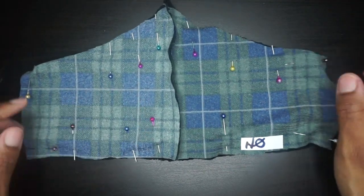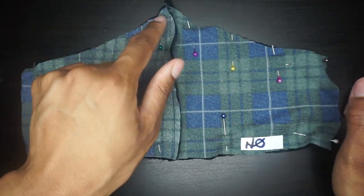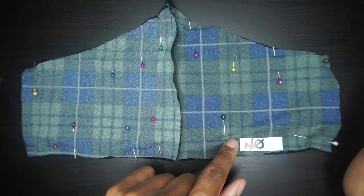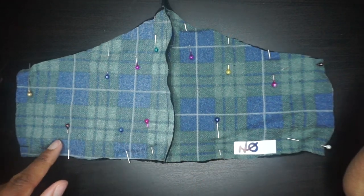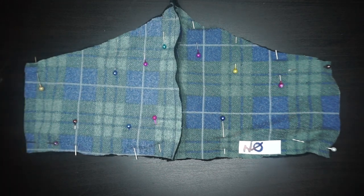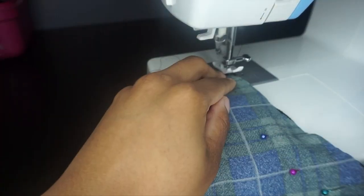Now we're going to sew all around the mask. Remember not to sew on that piece of tape, as well do not sew on top of the elastic. You're going to sew only the top and the bottom of the elastic. I'm going to show you what I mean on my machine so you better understand what I'm saying.